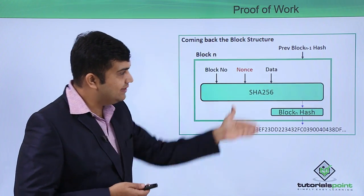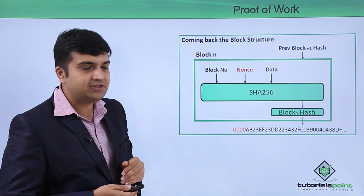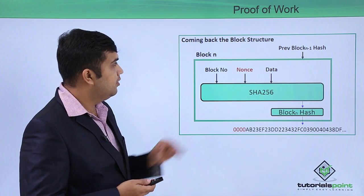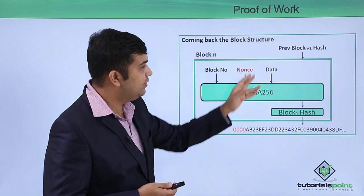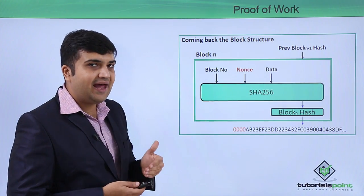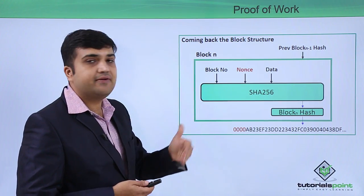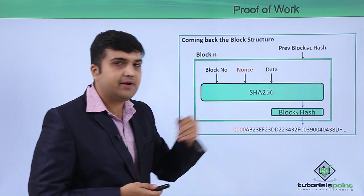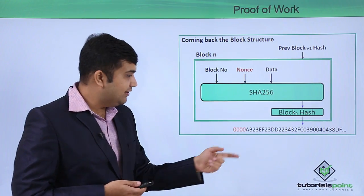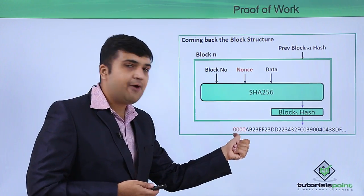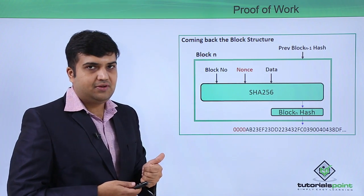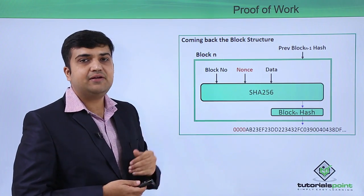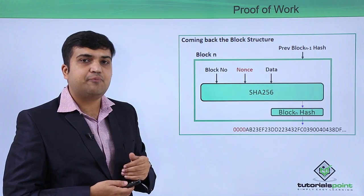Let's see this in the context of the block structure as well. We will have to find out this nonce such that each time we produce a hash value over here, it should have four leading zeros. So this is how the arrangement should work in case of proof of work.